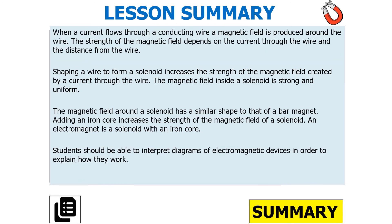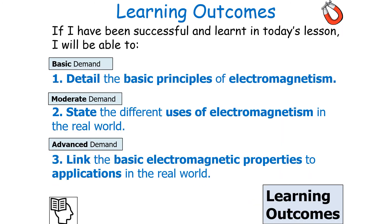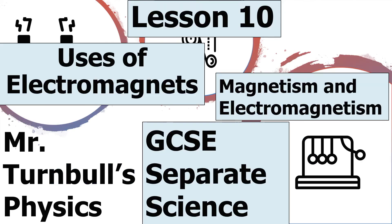From today's lesson: when a current flows through a conducting wire, a magnetic field is produced around the wire, and the strength of the field depends on the current and the distance from the wire. You should be able to interpret diagrams of electromagnetic devices to explain how they work, detail the basic properties of electromagnetism, state the different uses, and link those properties to real-world applications. Thank you very much for listening and have a lovely day.